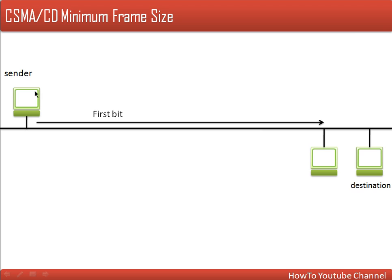Let's look at a scenario. The sender starts transmitting its frame, sends the first bit, and other bits are on the way. When that first bit arrives at the other node, that node also starts transmitting. At this point, two nodes are transmitting their data at the same time, which results in a collision.